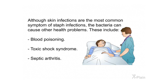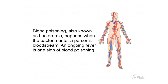Although skin infections are the most common symptom of staph infections, the bacteria can cause other health problems, including blood poisoning, toxic shock syndrome, and septic arthritis. Blood poisoning, also known as bacteremia, happens when the bacteria enter a person's bloodstream. An ongoing fever is one sign of blood poisoning.